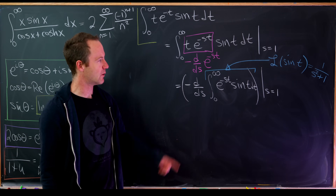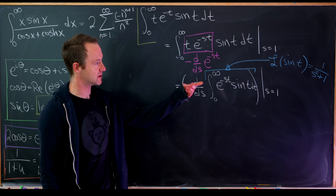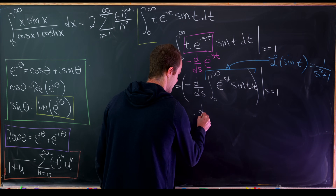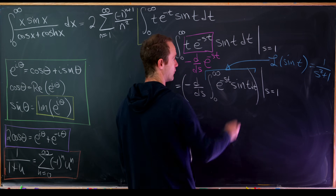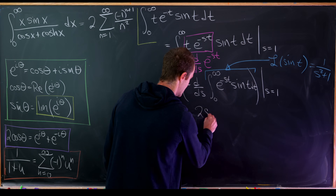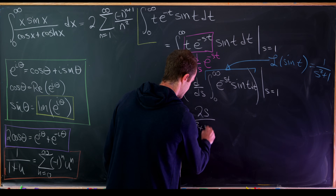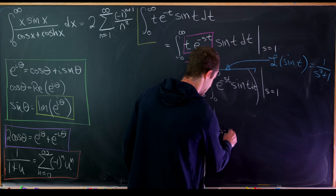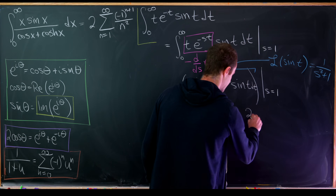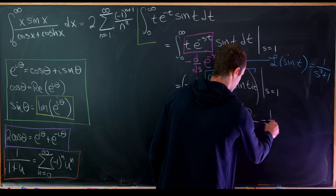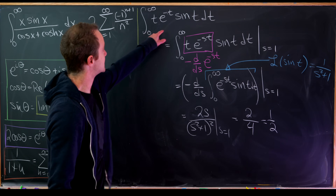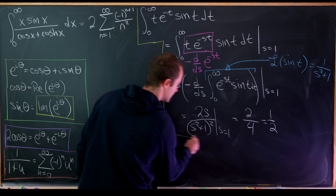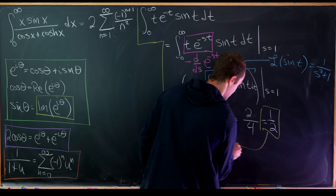The Laplace transform of sine of t is one over s squared plus one. So we need negative the derivative with respect to s of one over s squared plus one. That derivative gives 2s over s squared plus one quantity squared. The two minus signs cancel. Evaluating at s equals one gives two over four, which is one half. So this bracketed integral equals one half.